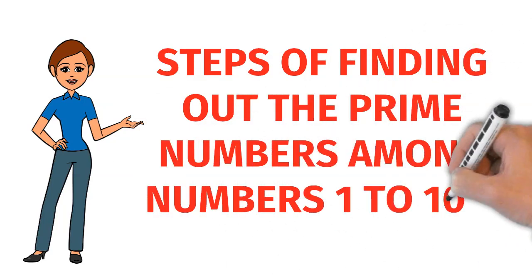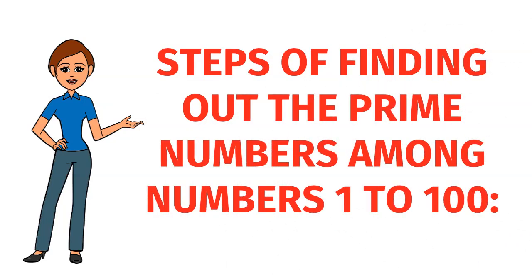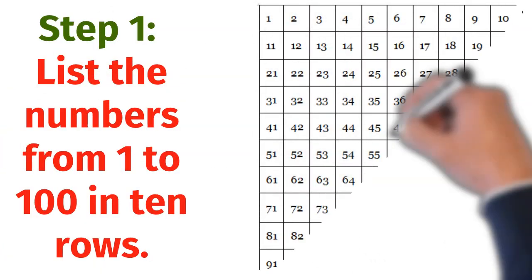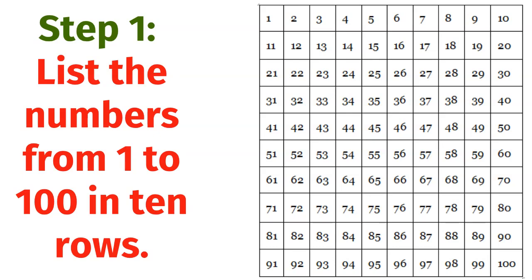Steps for finding prime numbers among numbers 1 to 100. Step 1: list the numbers from 1 to 100 in 10 rows.